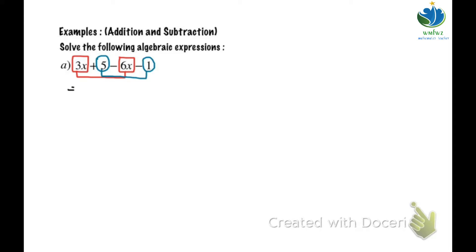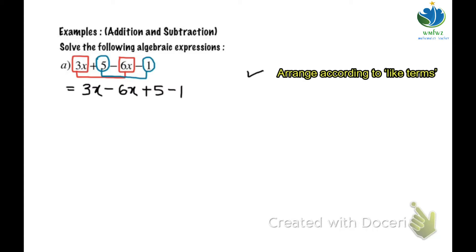So now we have 3x. Bring the operation in front of every term. So now we have negative 6x. So we have 3x minus 6x plus 5 minus 1. Okay, we already arranged.